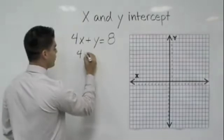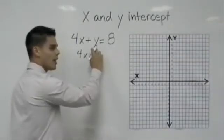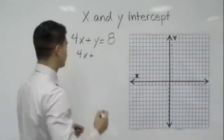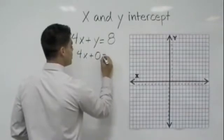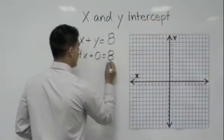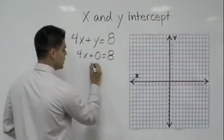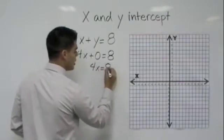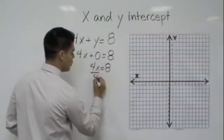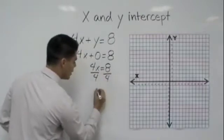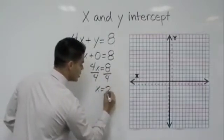So let's rewrite the equation, 4x plus y, but instead we're going to write a 0. So, plus 0 is equal to 8. Now I know that 4x plus 0 just gives me 4x and that equals 8. So let's isolate the variable by dividing by 4 and we get x is equal to 2.